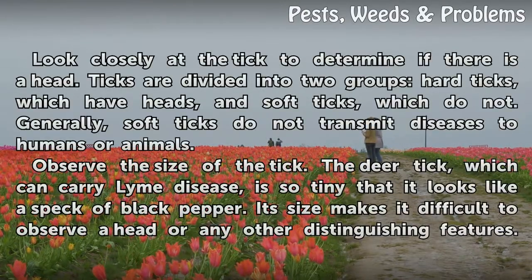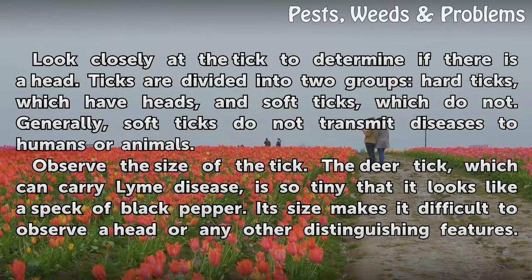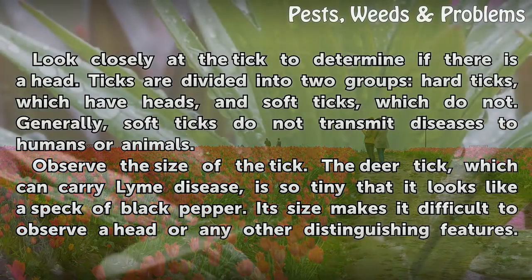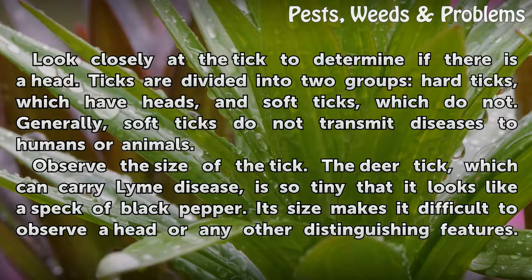Look closely at the tick to determine if there is a head. Ticks are divided into two groups: hard ticks, which have heads, and soft ticks, which do not. Generally, soft ticks do not transmit diseases to humans or animals.